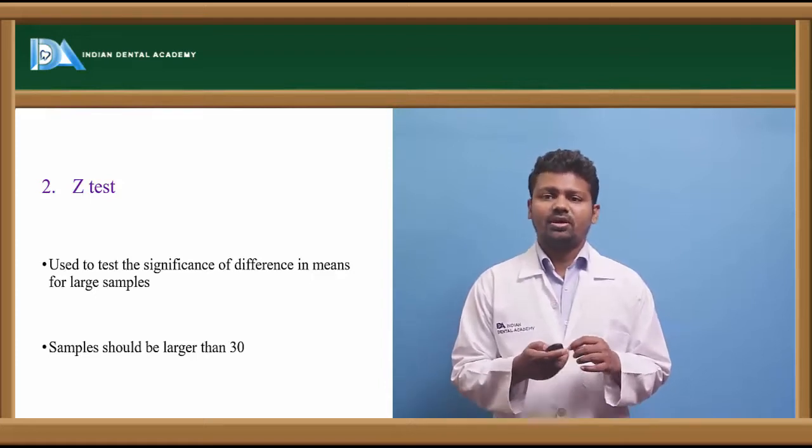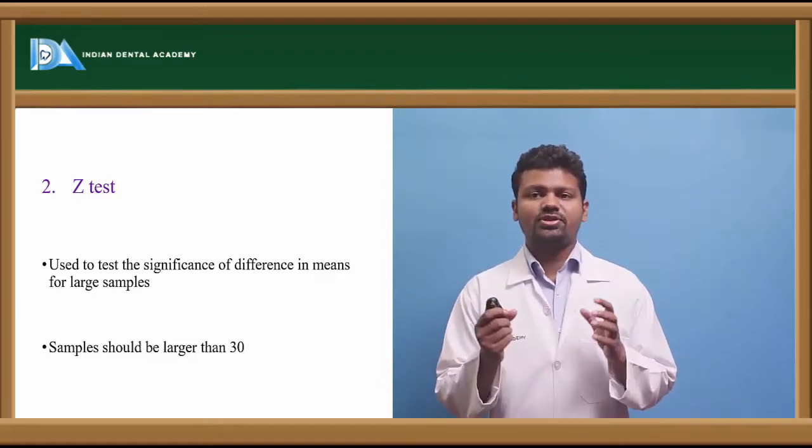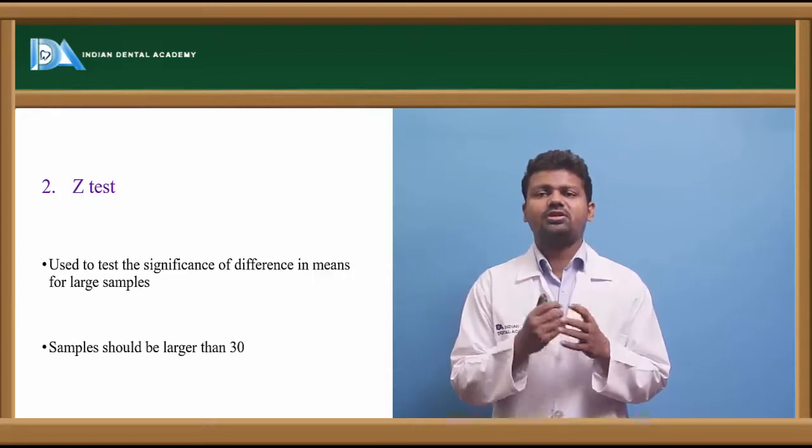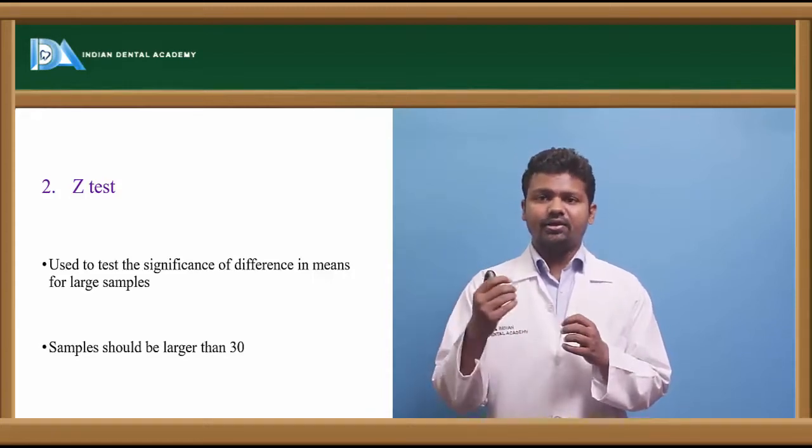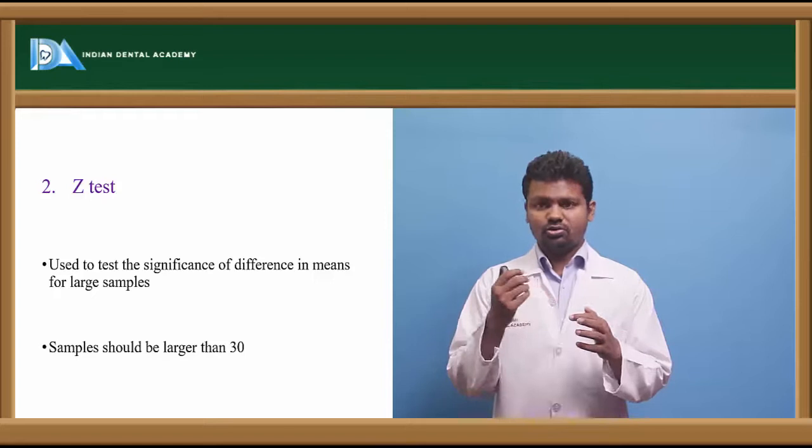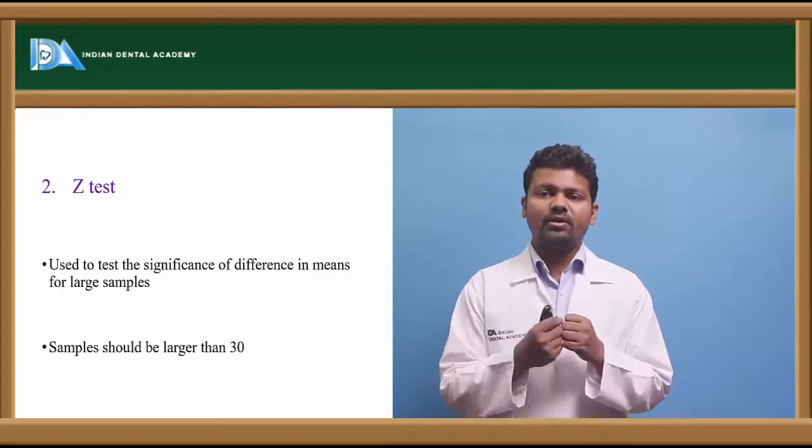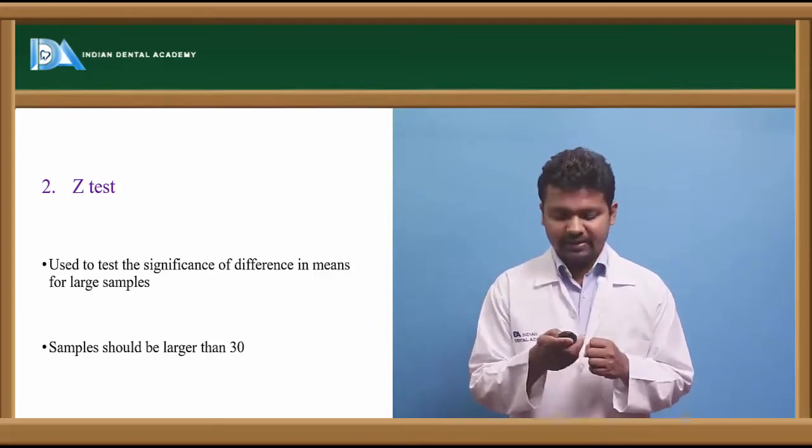The Z-test is used to test the significance in the difference of means of a large sample. For example, suppose 100 people are receiving instruction for dental caries prevention. To know the significance of their mean, we use the Z-test.